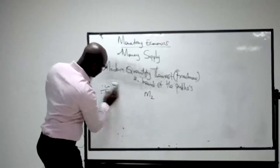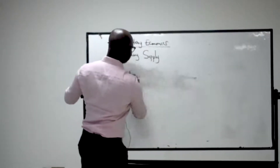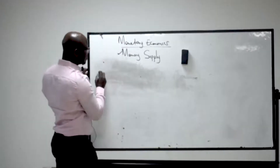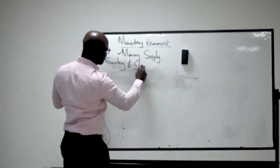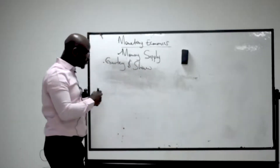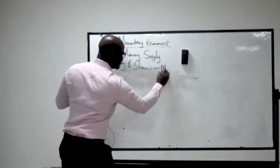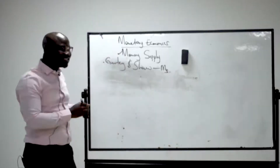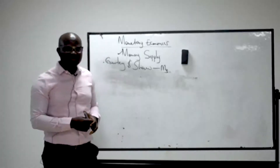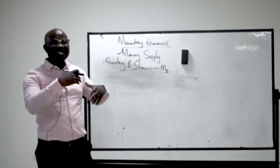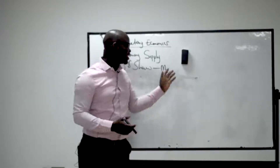The last school of thought is associated with scholars called Gurley and Shaw, and this corresponds to M3. They added the deposit or savings of non-financial institutions to M2.